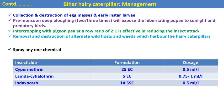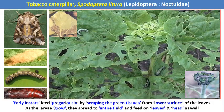Management practices for Bihar hairy caterpillar: collection and destruction of egg masses and early instar larvae at initial stage. Pre-monsoon deep ploughing exposes pupae to sunlight and predatory birds, since pupation occurs in soil. Intercropping with pigeon pea at a row ratio of 2:1 effectively reduces attack. Removal and destruction of alternate host weeds is also recommended. For chemical control, recommended insecticides are cypermethrin, lambda-cyhalothrin, and indoxacarb.